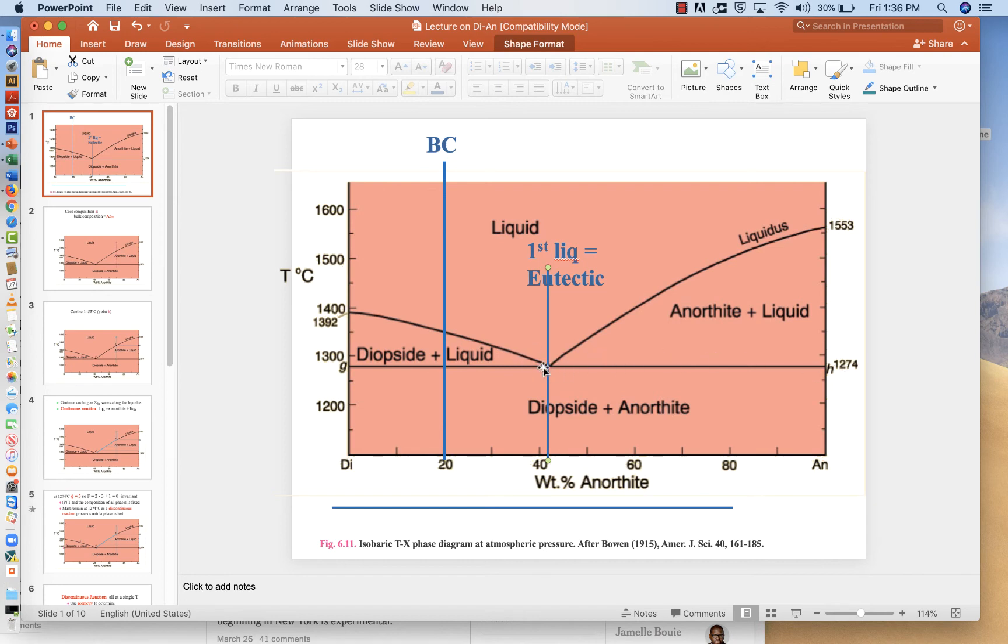As we add heat, once the anorthite is gone, temperature will now begin to increase. So pushing the system up in temperature and towards diopside, the sum of those two vectors will drive us along that diopside plus liquid liquidus. And the liquid will migrate from the eutectic composition.